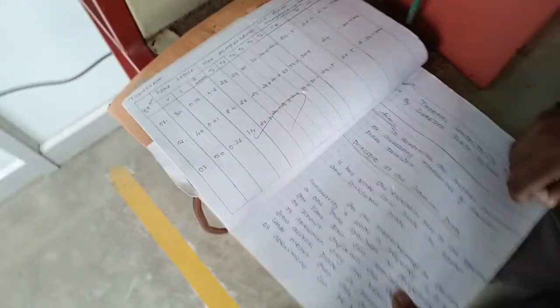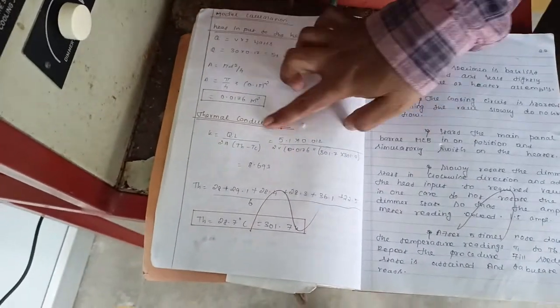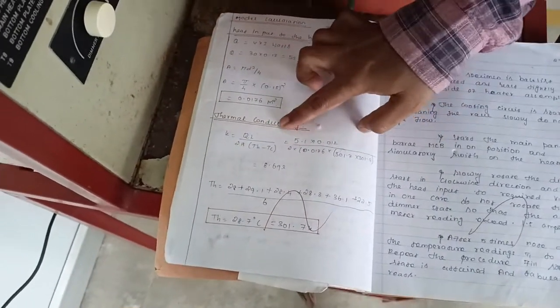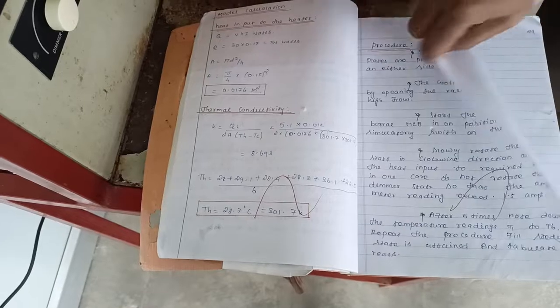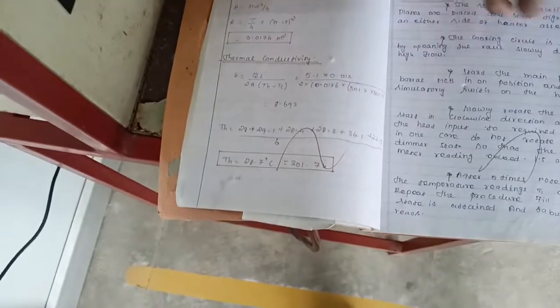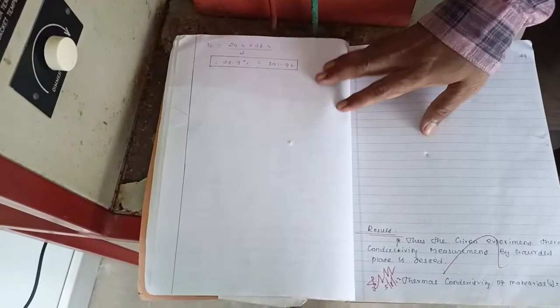The calculation can be done using the formulas from the heat and mass transfer data book. The conduction principle formula can be used. Based on this, we will calculate the thermal conductivity value.